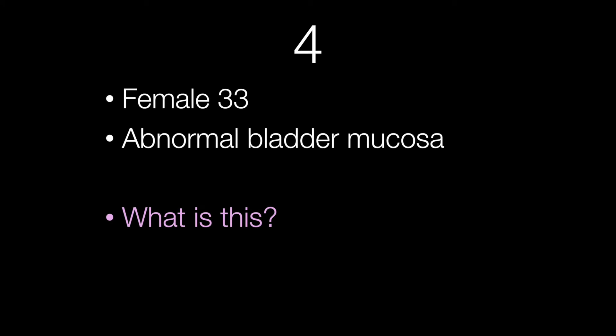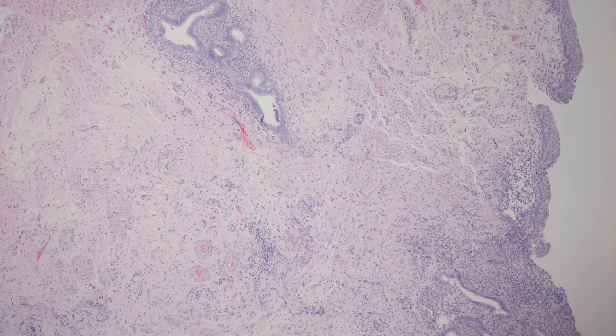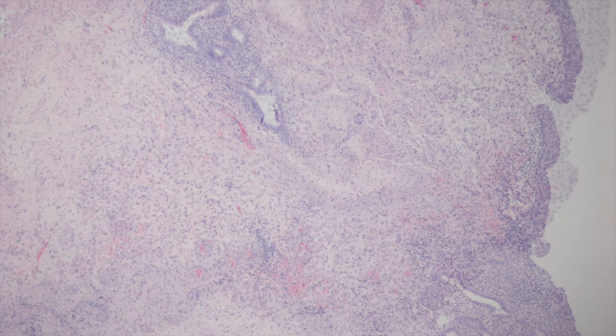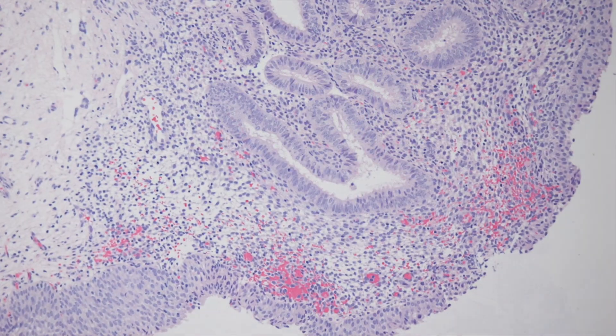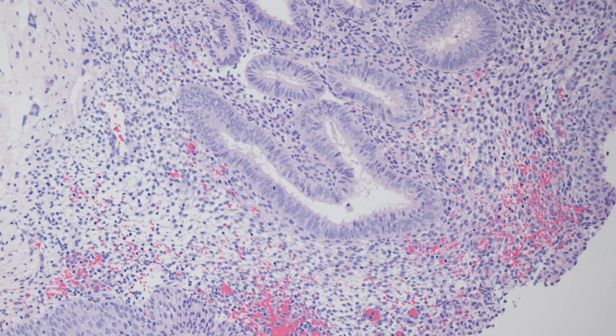The fourth case is from a female of 33 with an abnormal bladder mucosa. What is the abnormality causing the abnormal bladder mucosa? This is a low power view, and here is a higher power view that should clinch the diagnosis.